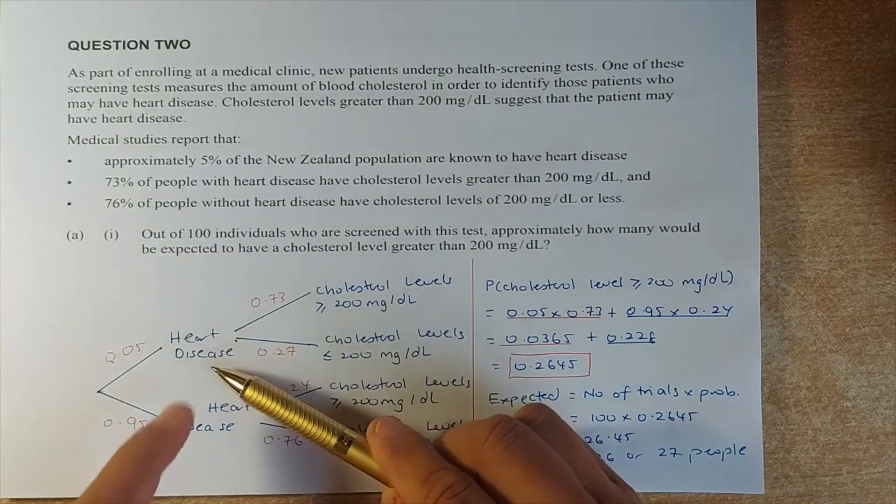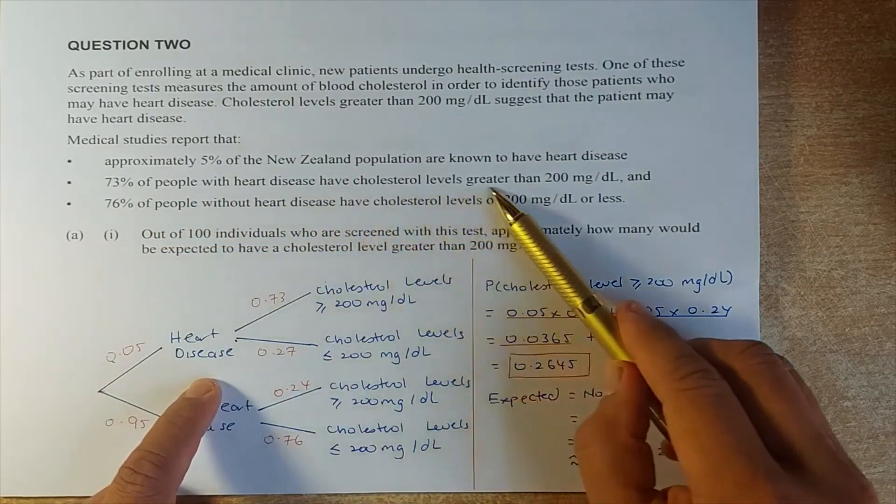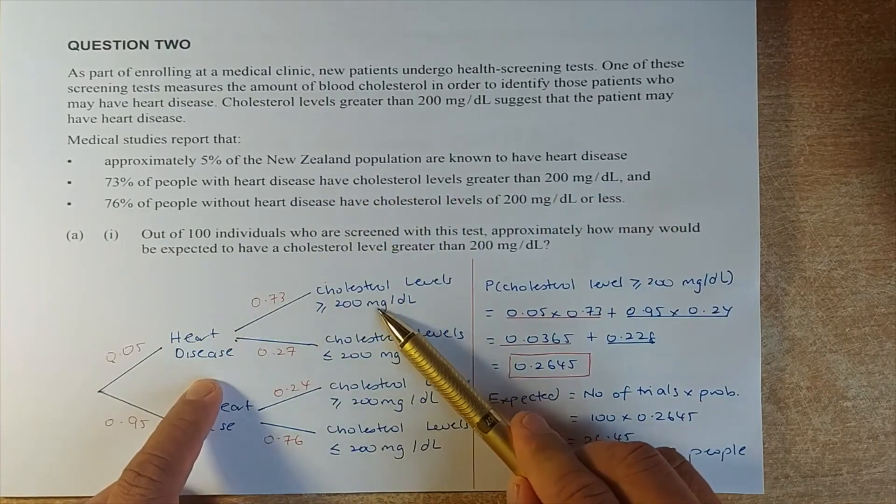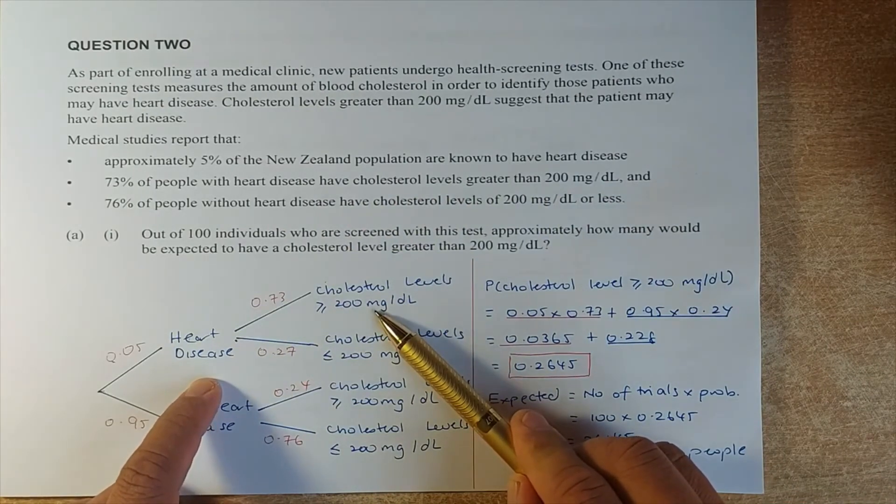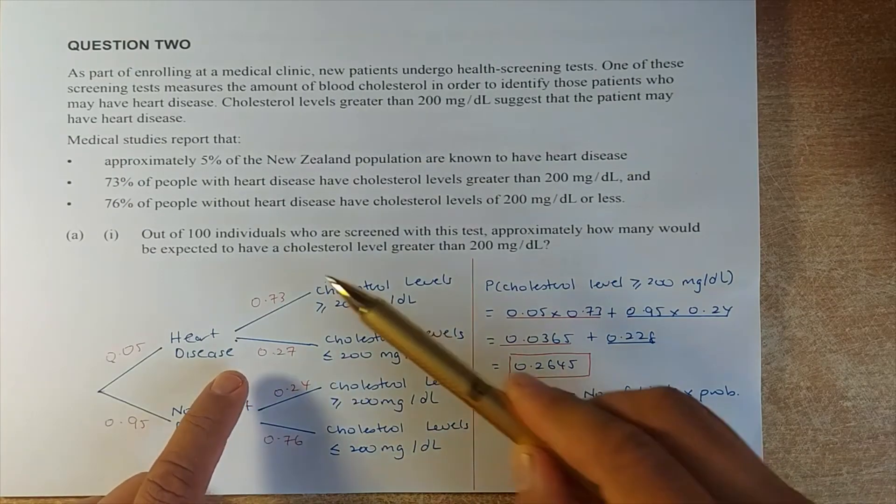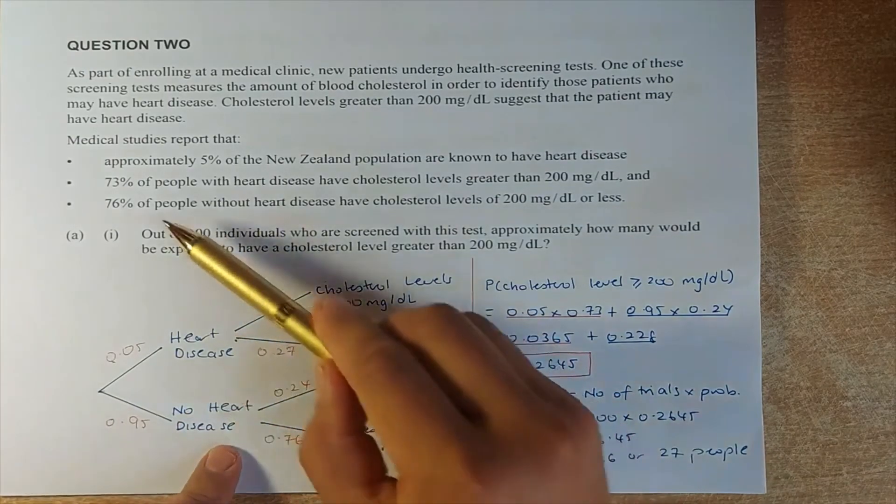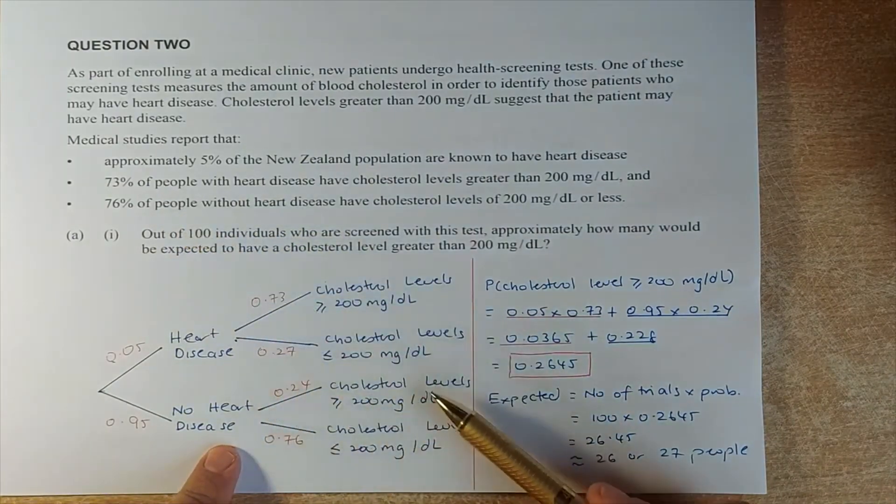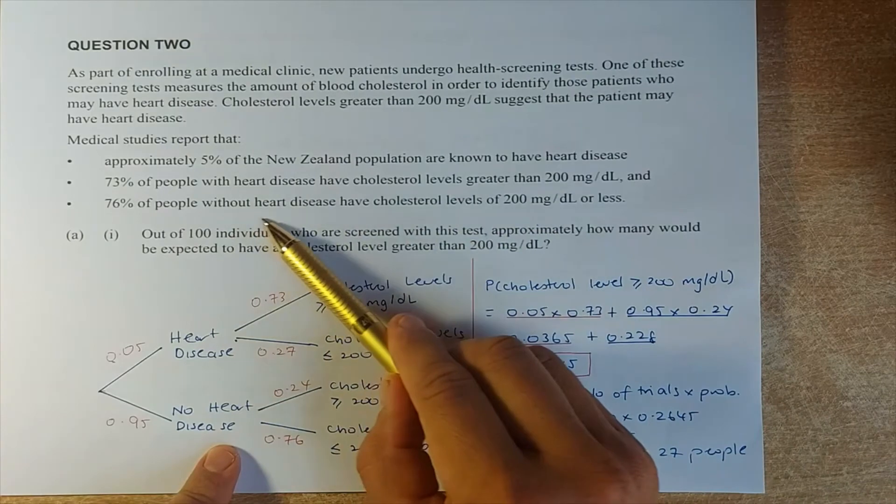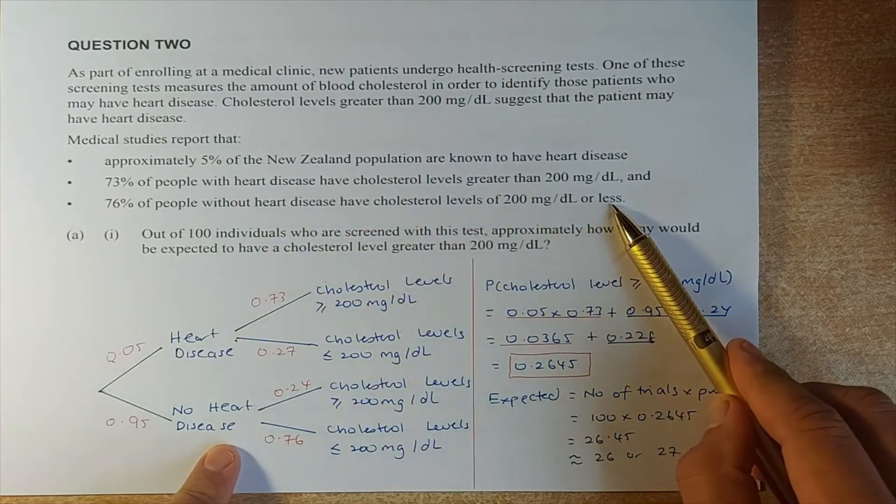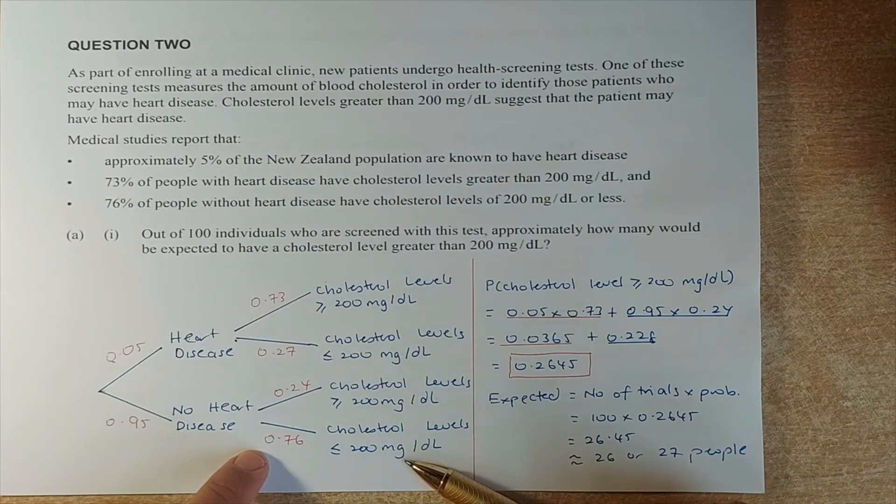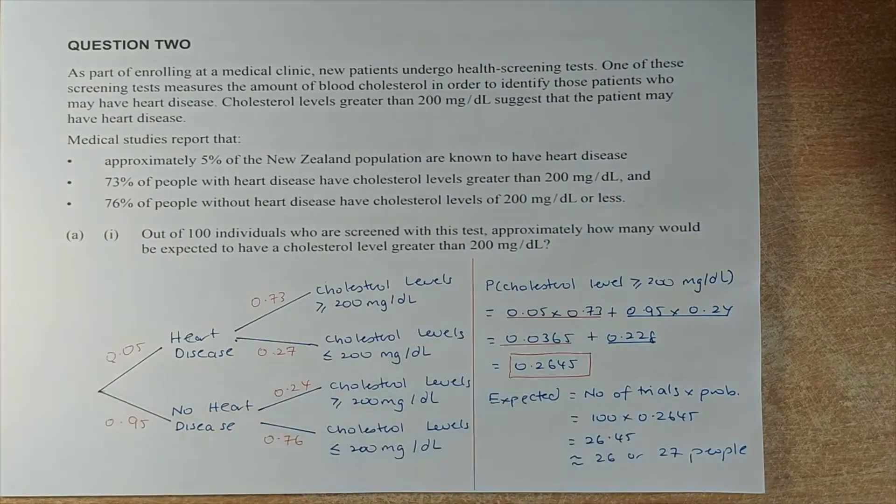Then they say of the heart disease, 73% have cholesterol more than 200 mg. So 0.73 have cholesterol level more than 200. So 27% or 0.27 have less than 200. Similarly, those with no heart disease, 76% have cholesterol 200 mg or less. So 0.76 less than 200 mg and to have more is 0.24.